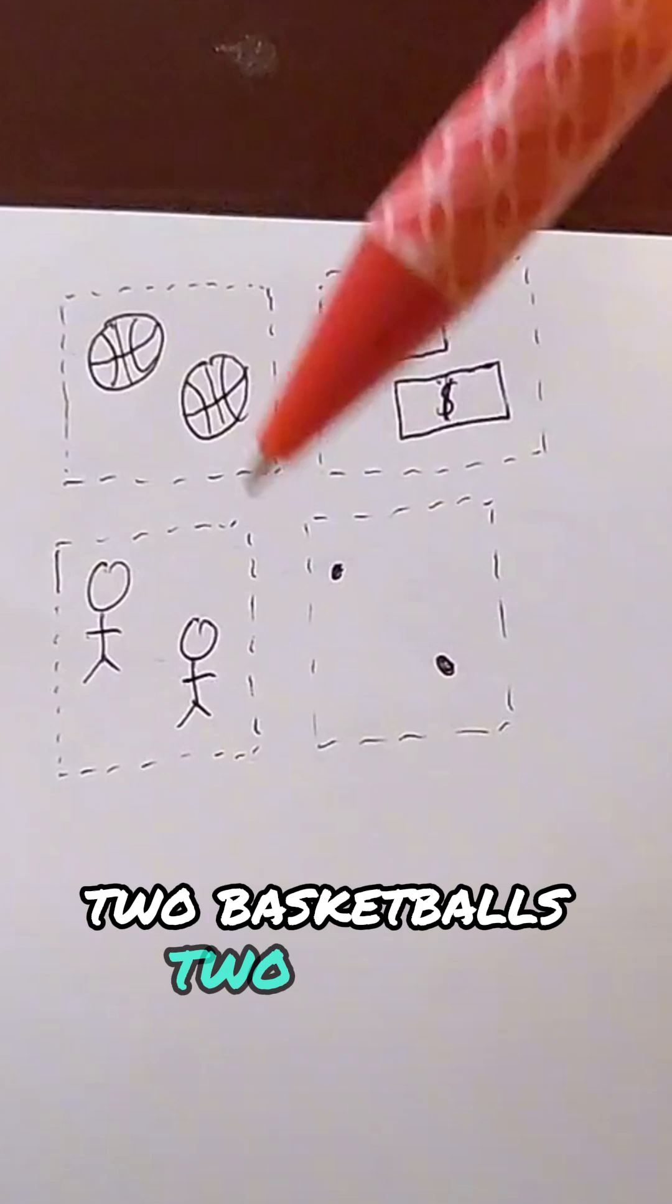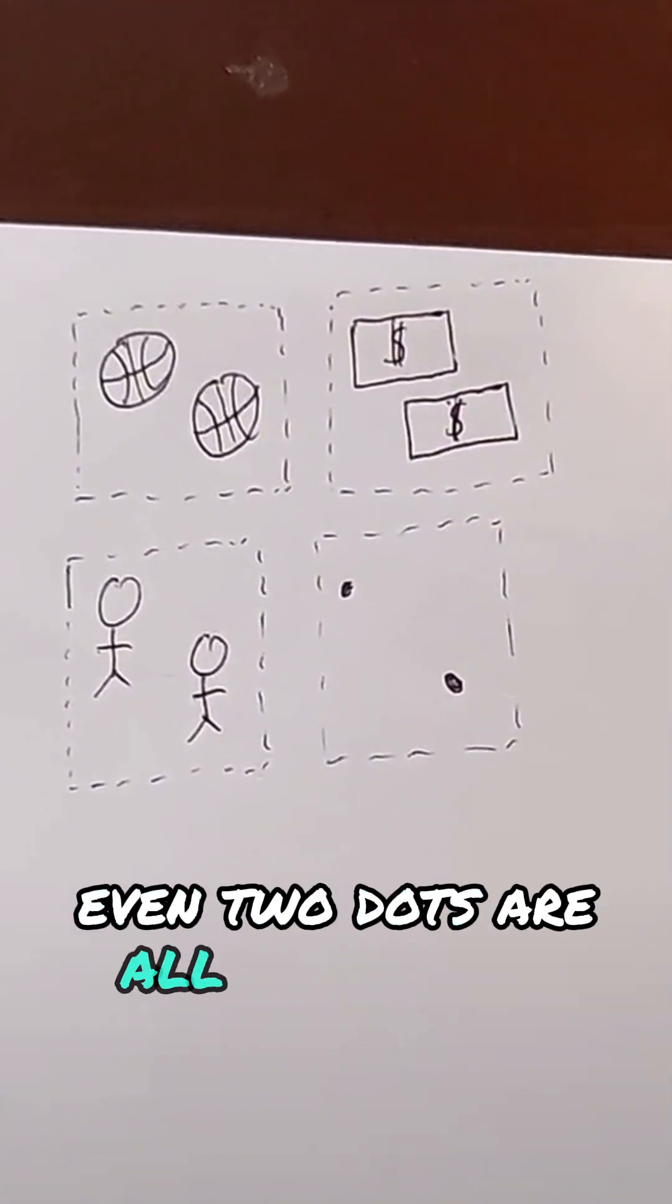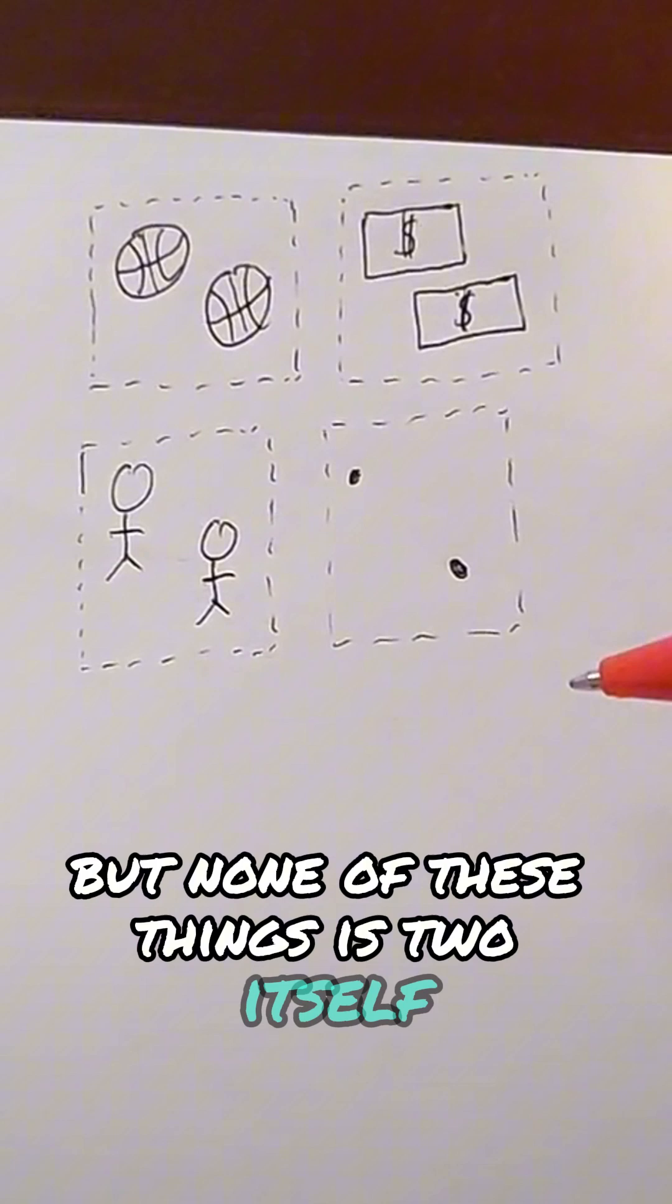Two dollars, two basketballs, two people, even two dots are all real things. But none of these things is two itself.